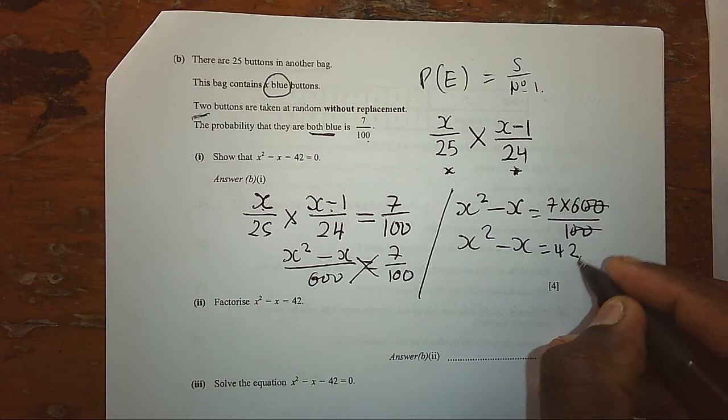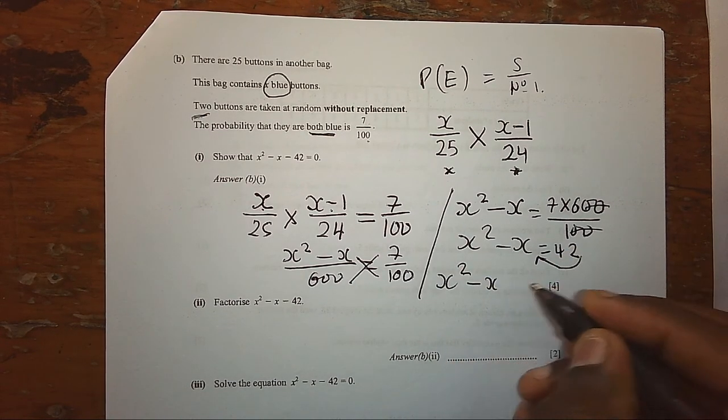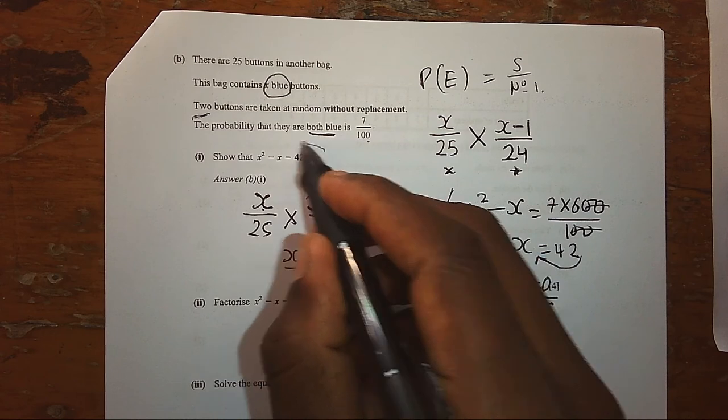We can rearrange that. We have X² - X minus 42 is equal to 0. By doing that, we have now shown part A.